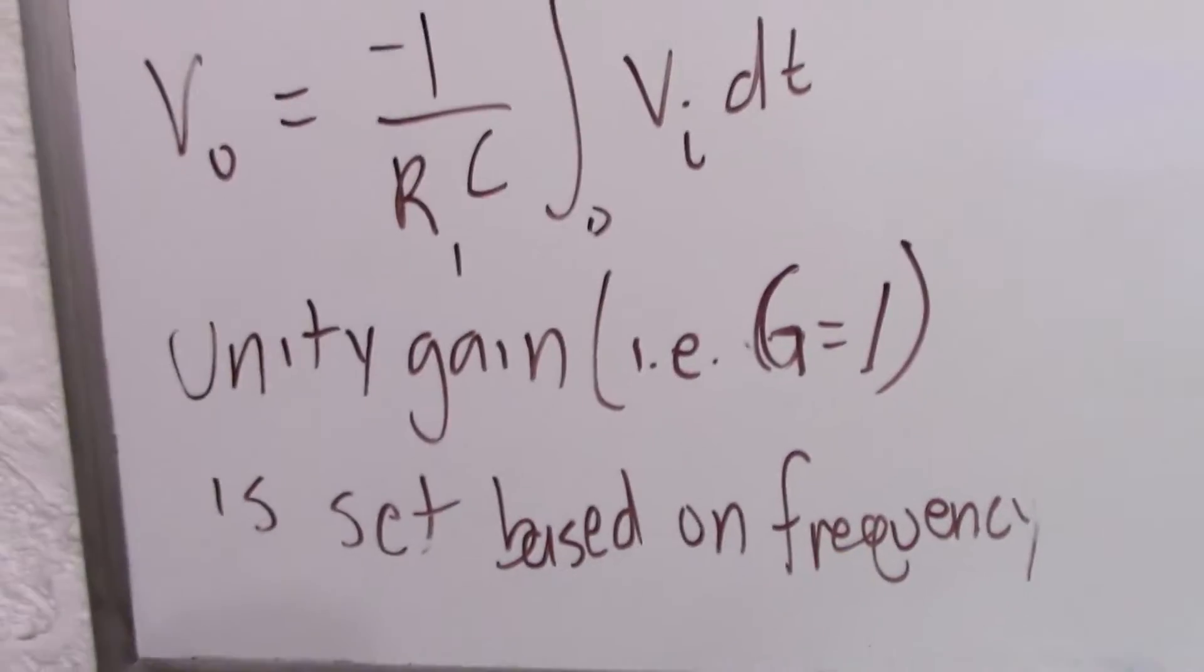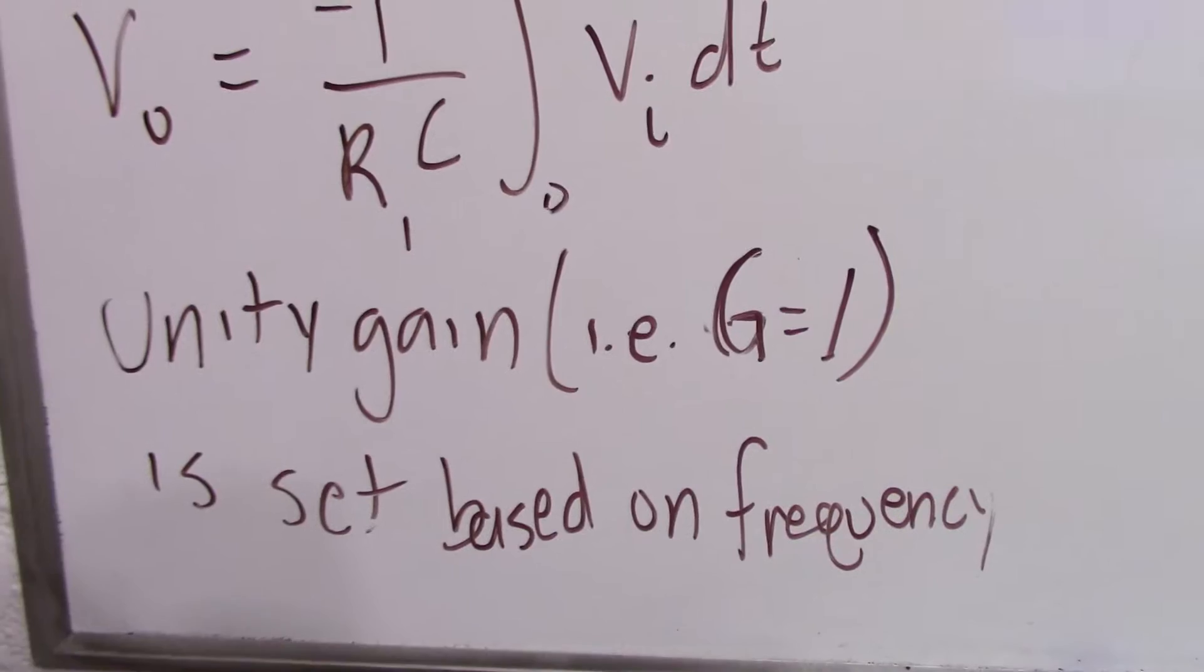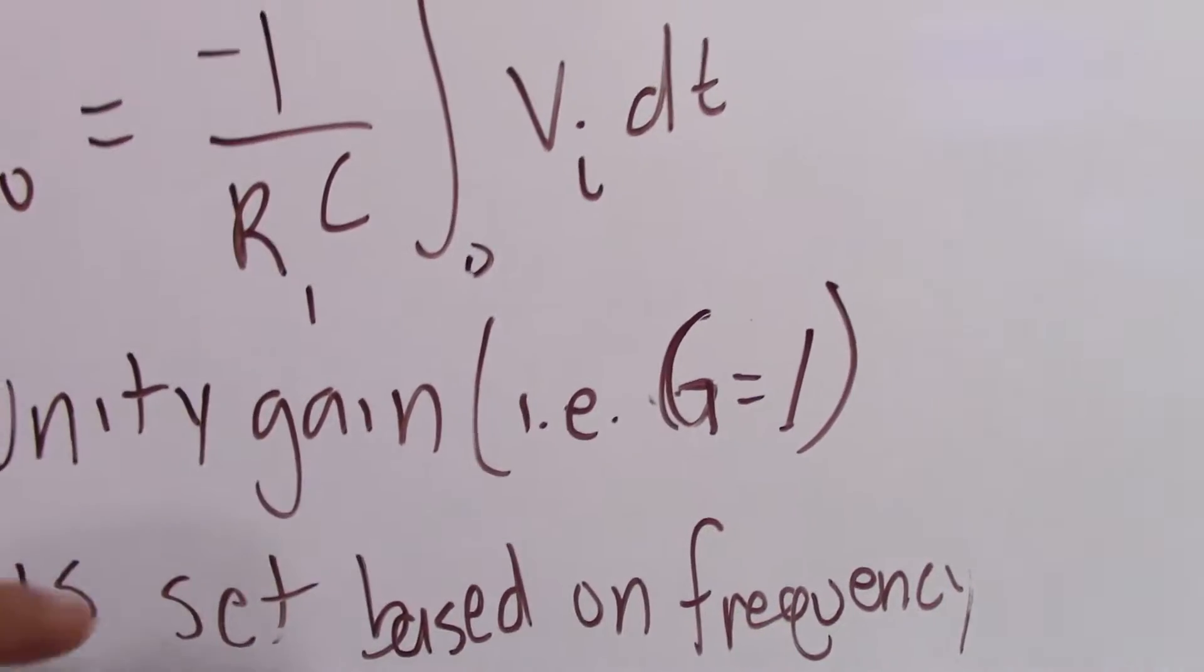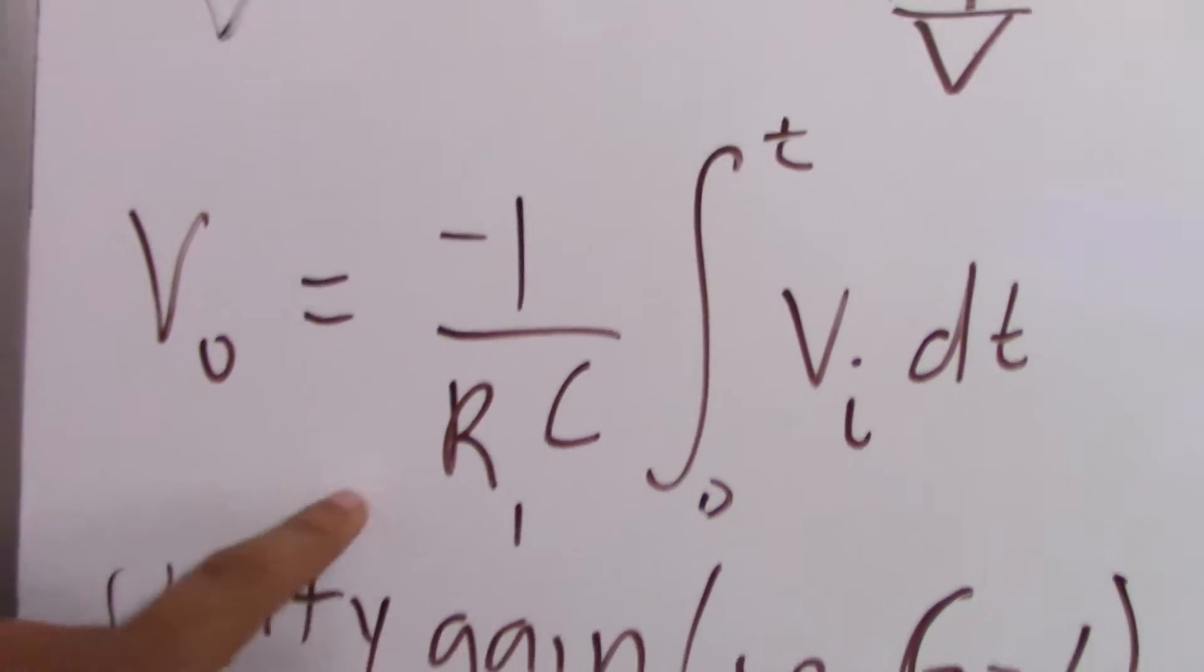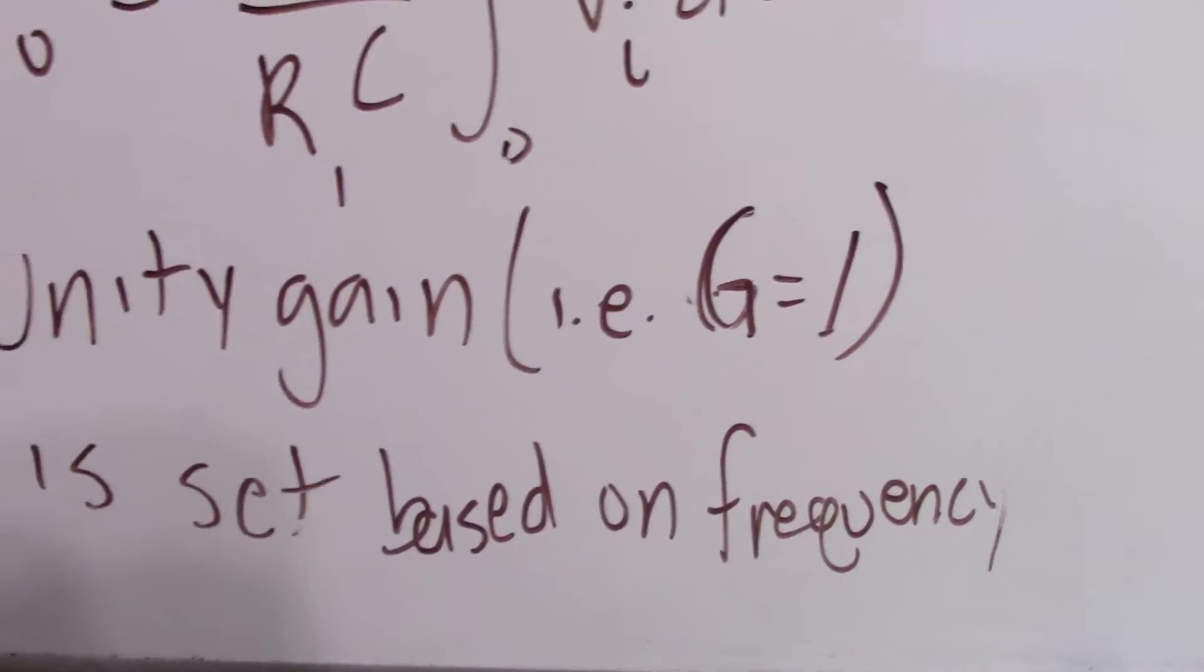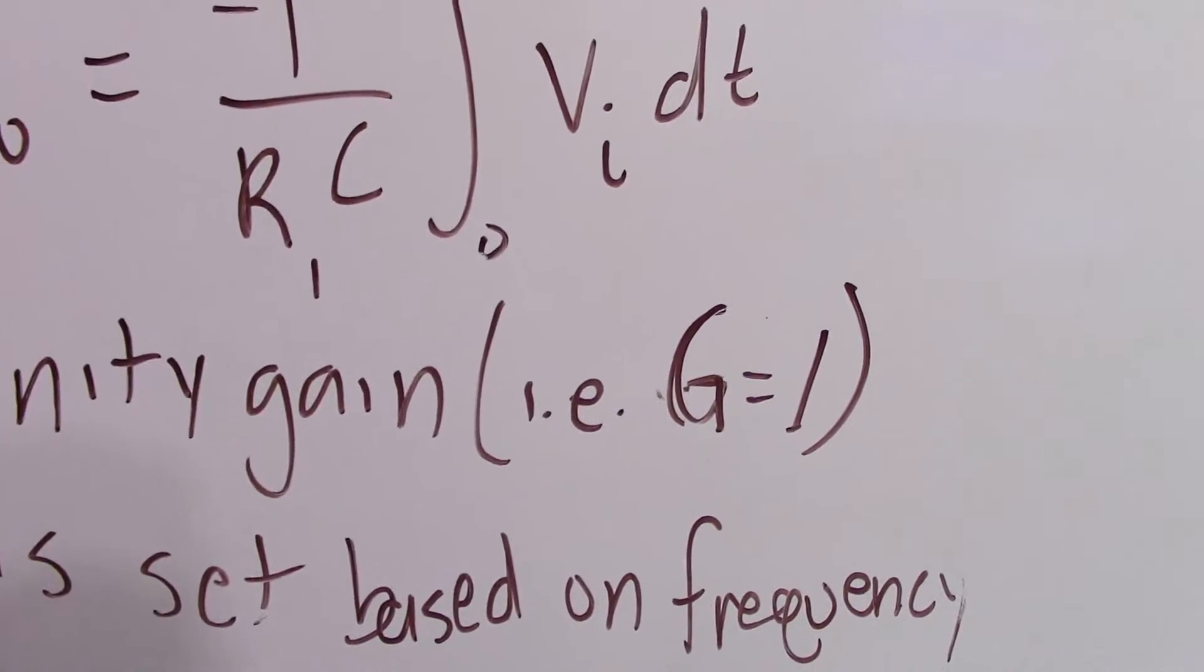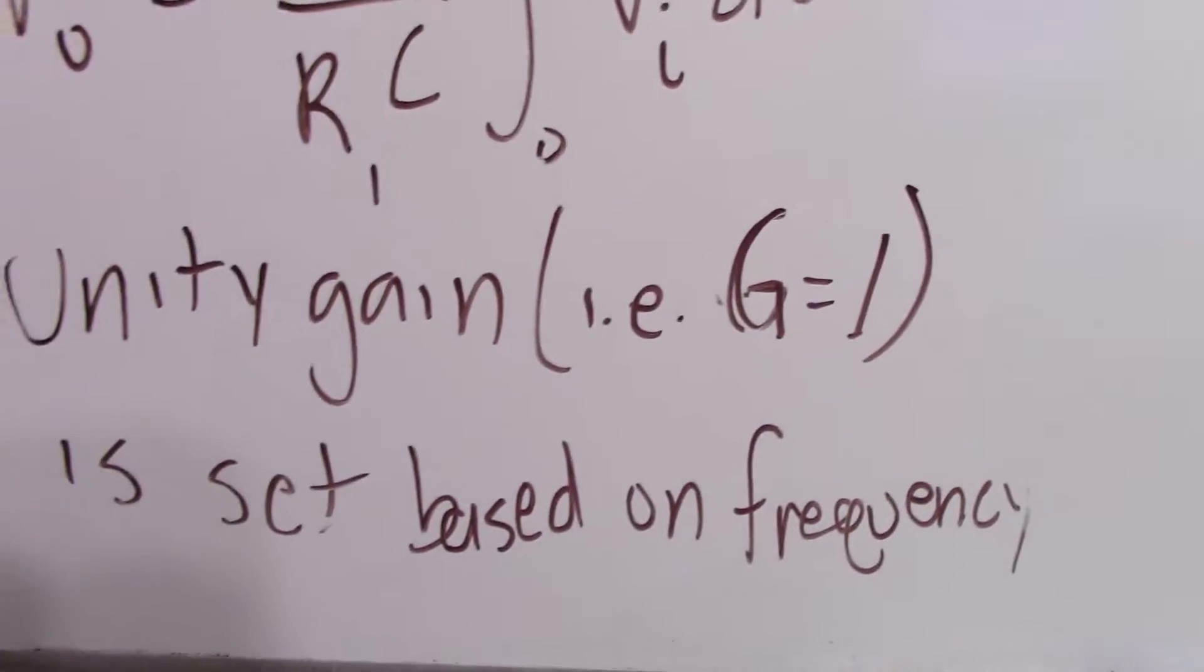So there's this thing called unity gain, meaning there's one-to-one gain depending on the frequency of the input. So the gain actually is dependent on the frequency, so you got to keep that in mind. And you can set this based on the frequency that you want unity gain, or you can set it based on the capacitor you are using.